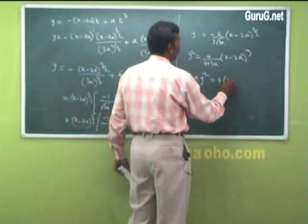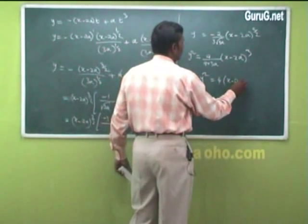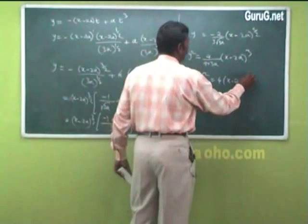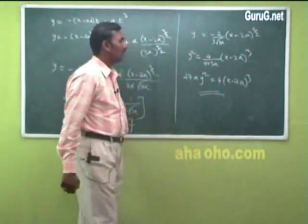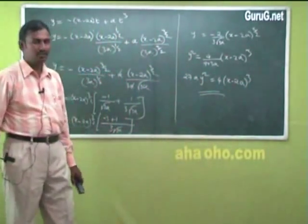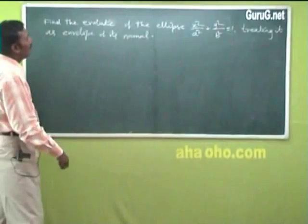After simplification, squaring both sides and taking the cube root: 27ay² = 4(x - 2a)³, which is the equation of the evolute of the parabola y² = 4x.